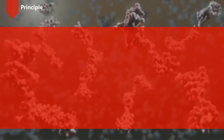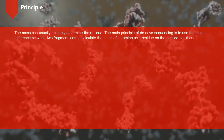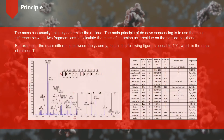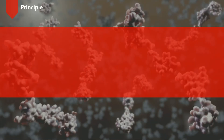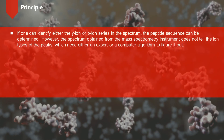The mass can usually uniquely determine the residue. The main principle of de novo sequencing is to use the mass difference between two fragment ions to calculate the mass of an amino acid residue on the peptide backbone. For example, the mass difference between the Y7 and Y6 ions in the following figure is equal to 101, which is the mass of residue threonine. Thus, if one can identify either the Y ion or B ion series in the spectrum, the peptide sequence can be determined.